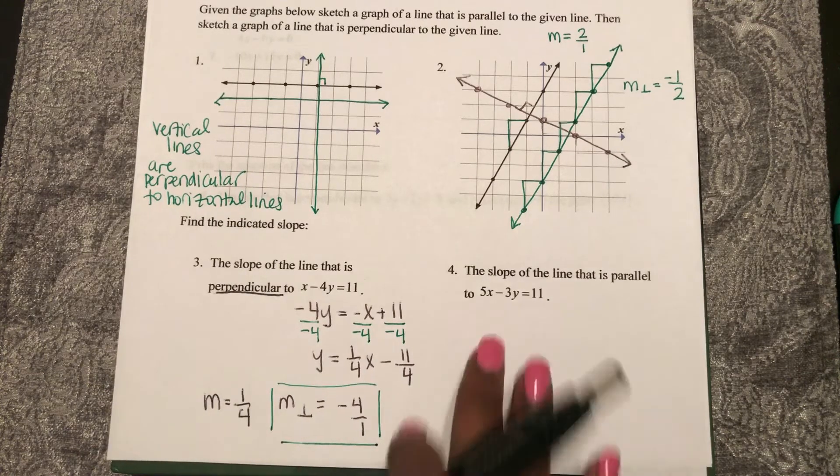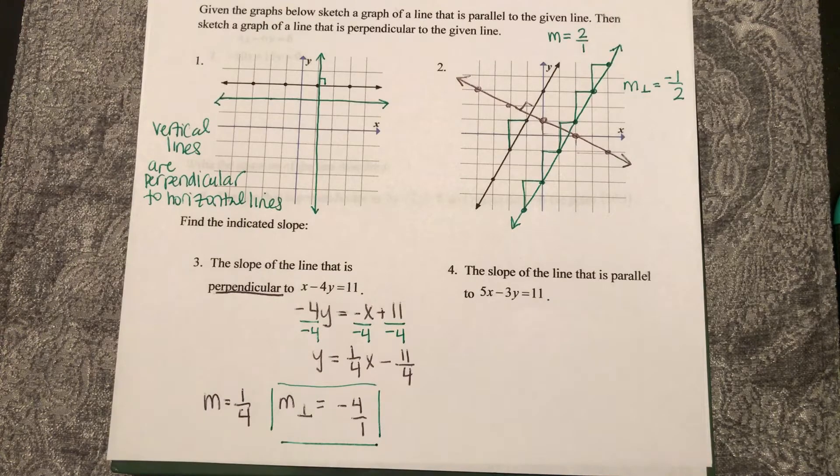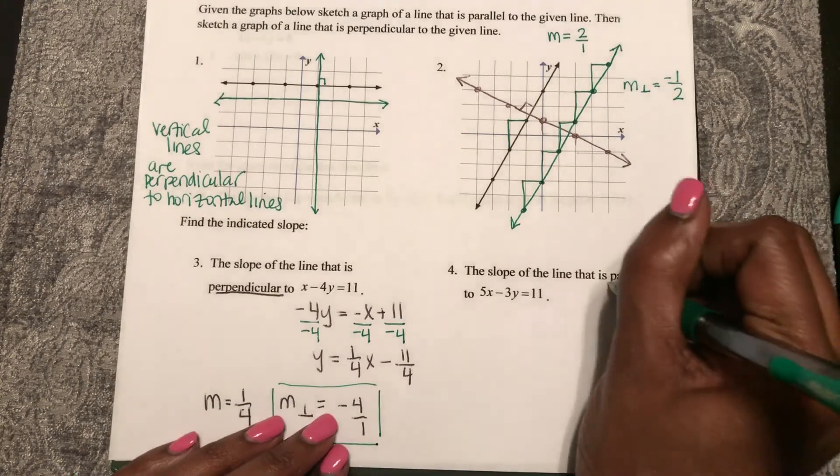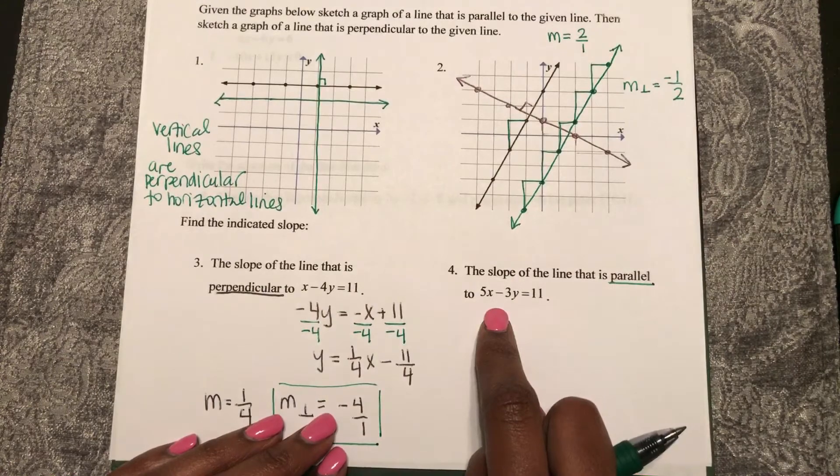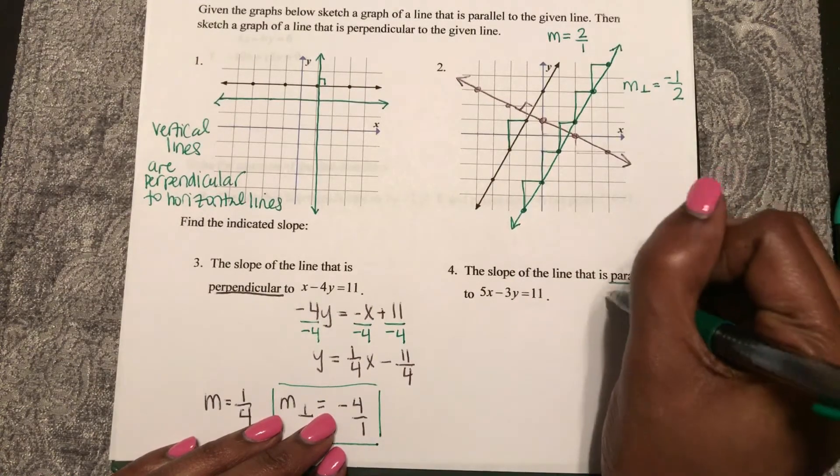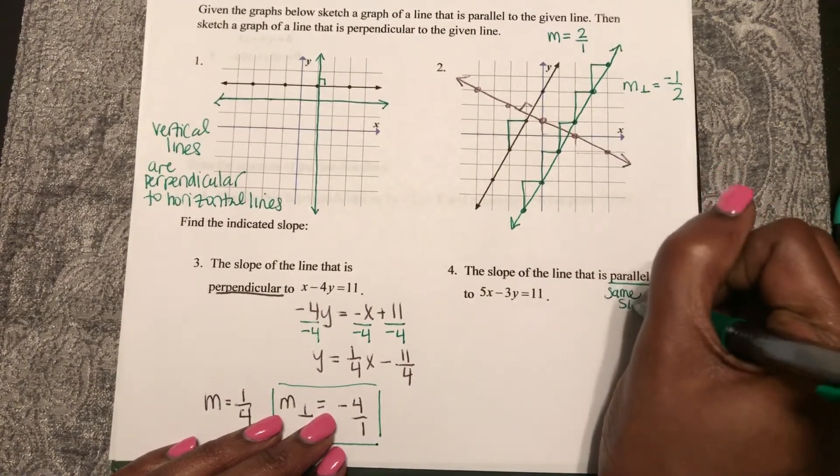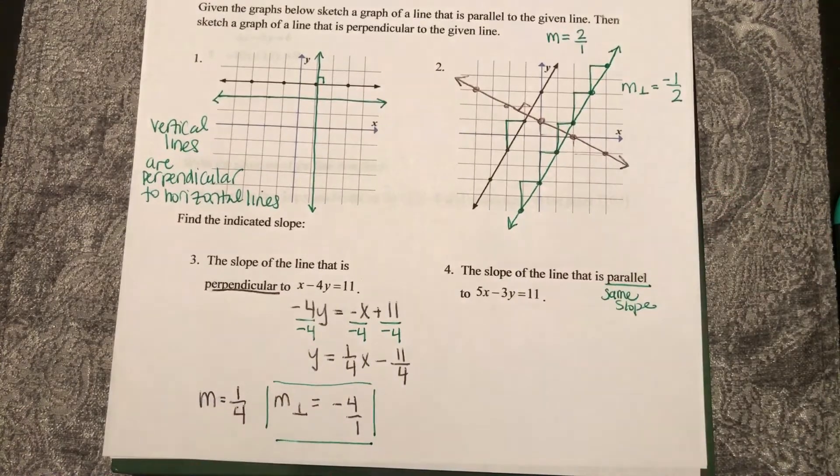So let's look at number 4. Find the slope of the line that is parallel to this line. So remember, parallel lines have the same slope, so my slope should be equal.